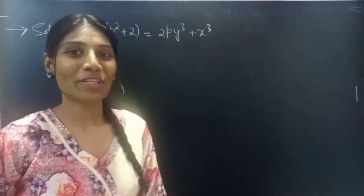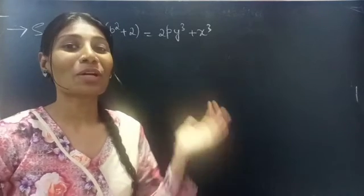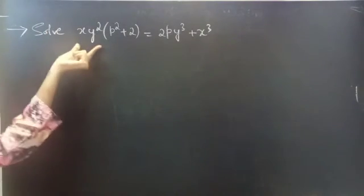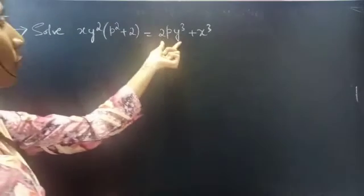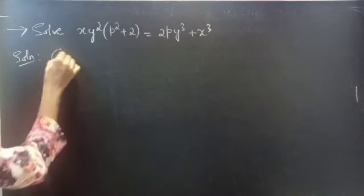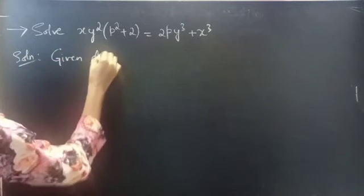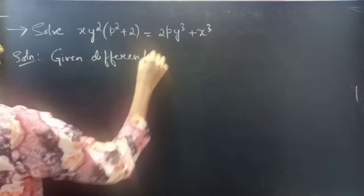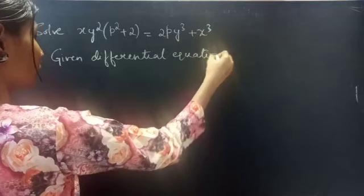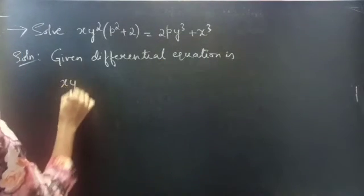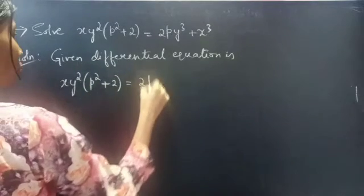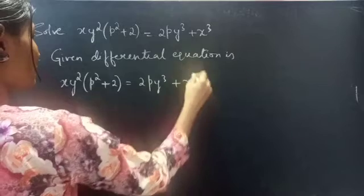Hello everyone, this is Zekalpna. In this video we are going to see a problem from solvable for P. So let's get started. The problem: solve xy² · (p² + 2) = 2py³ + x³.